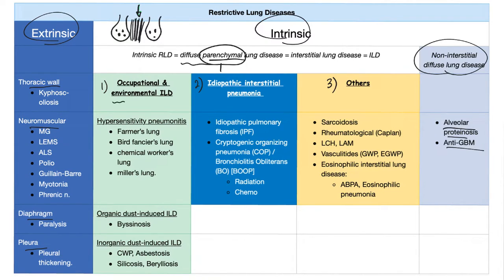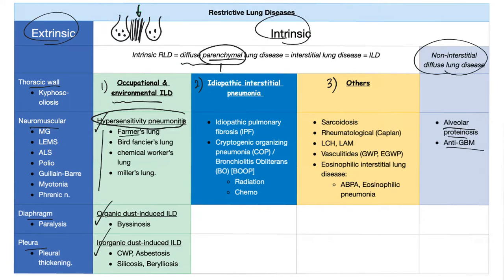Let's talk about number one: occupational and environmental. We have three subtypes — hypersensitivity pneumonitis, organic dust-induced interstitial lung disease, and inorganic dust-induced. Hypersensitivity pneumonitis is today's topic, and it has many subtypes. Here are four common examples: farmer's lung, bird fancier's lung, chemical worker's lung, miller's lung, and coffee maker's lung.